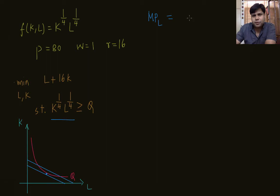So MPL is 1 by 4, k to the power 1 by 4, l to the power minus 3 by 4. Similarly, MPK is 1 by 4, l to the power 1 by 4, k to the power minus 3 by 4.